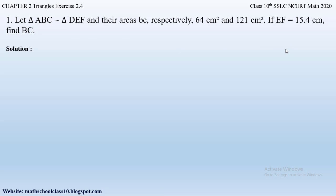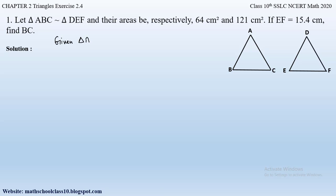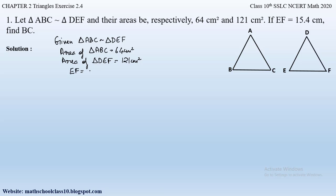Let us first draw the two triangles ABC and DEF, and write down what is given. Triangle ABC is similar to triangle DEF. Area of triangle ABC is 64 cm². Area of triangle DEF is 121 cm². Side EF is given as 15.4 cm, and we have to find side BC of triangle ABC.